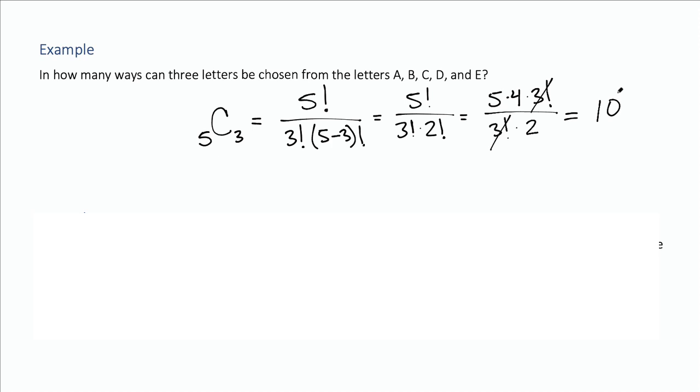So there are 10 ways to pick three of these letters. Again, the ordering doesn't matter. So in other words, if I were to choose A, B, and E, that would be the same as choosing B, A, and E. Those are the same three letters, so those count as the same collection of three letters.